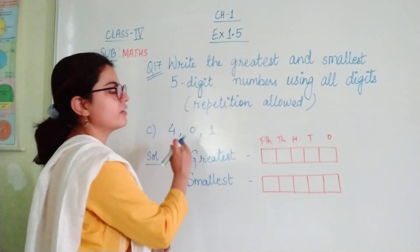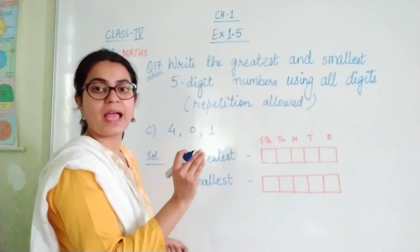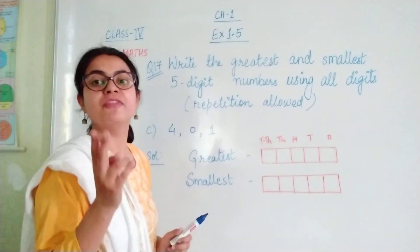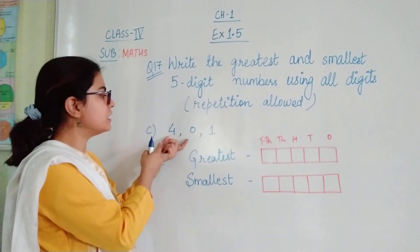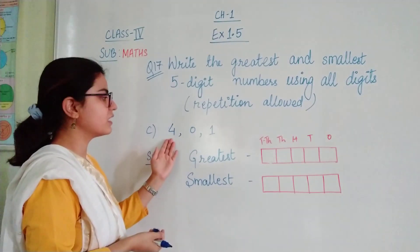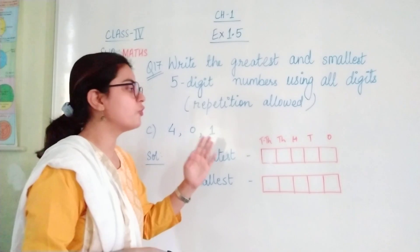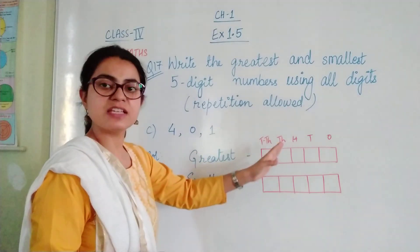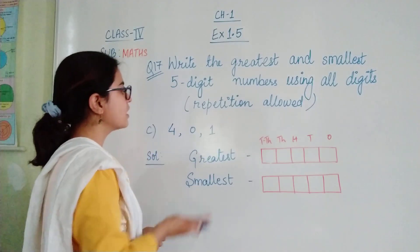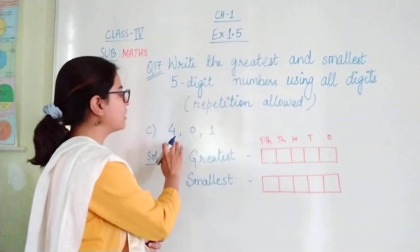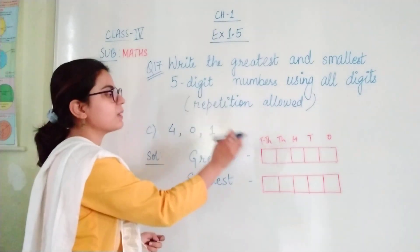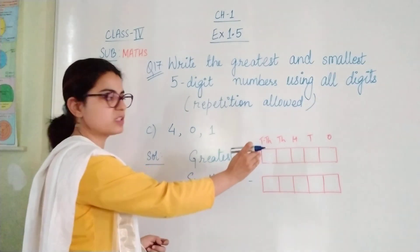For the greatest, arrange in descending order and what do we repeat? We repeat the highest value of the digit. Here 4 is the greatest number. So we repeat 4 at the highest place values. That means leaving these 2 digits on the smaller place values we repeat 4 as many times as required at the higher place values.